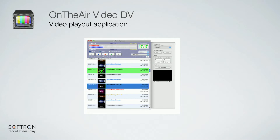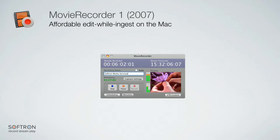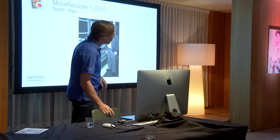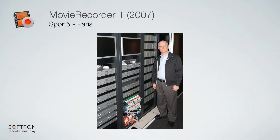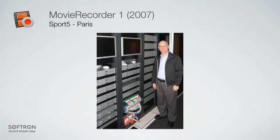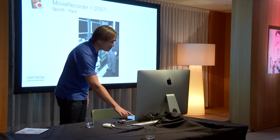That was MoveRecorder 1. It was running at the time on XServe and it was SD — we were happy to do one SD signal on the Mac. We had nice installations with that. For example, this installation was done at Sport5 Paris in 2007. Every channel required one XServe per SD channel, so you can see the kind of installation that entailed, but it worked really well.